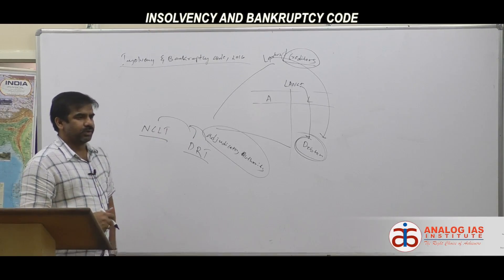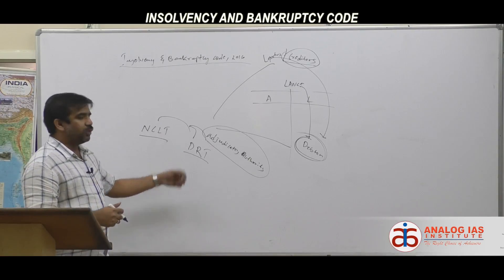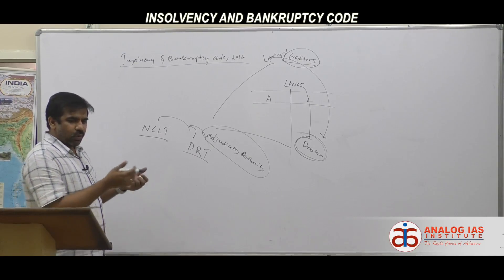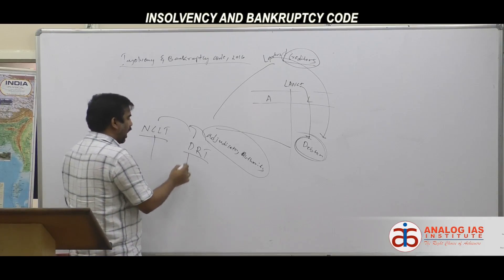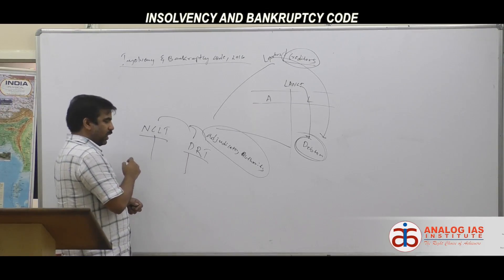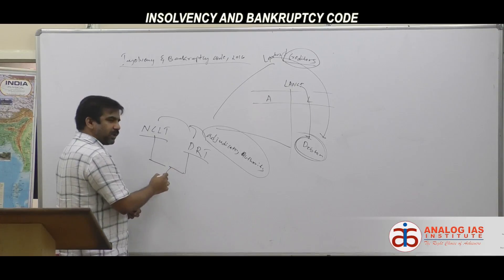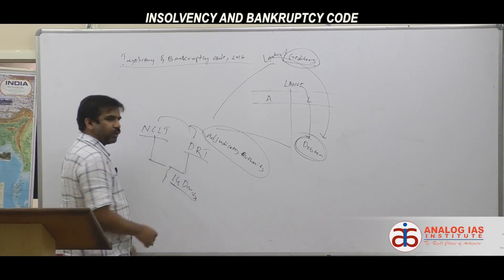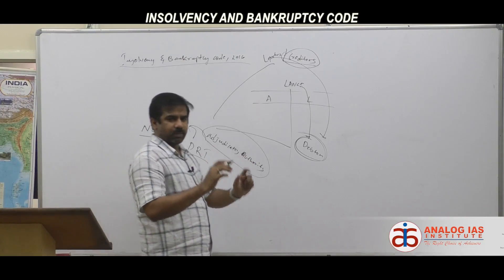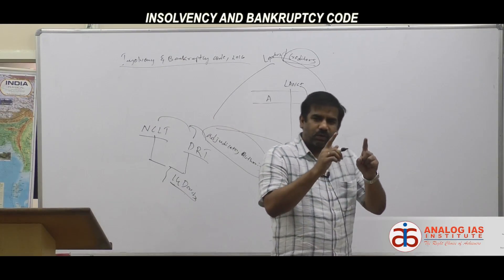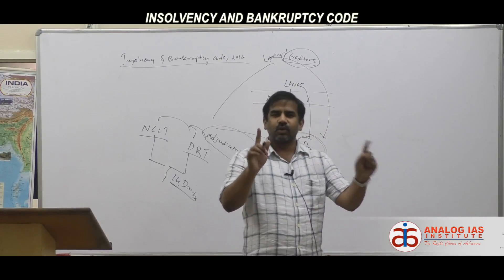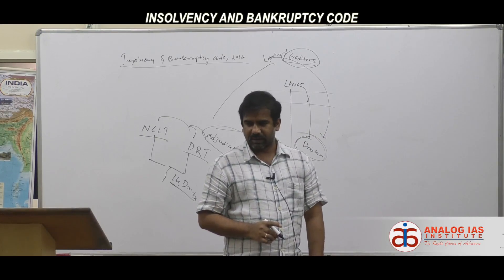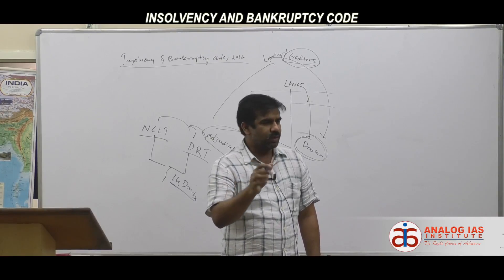For an individual or partnership firm, one must approach the Debt Recovery Tribunal (DRT). Once an application is submitted, the authority has to either accept or reject it within a span of 14 days. Within those 14 days, the authority must decide whether they are going to proceed with resolving the insolvency or bankruptcy.